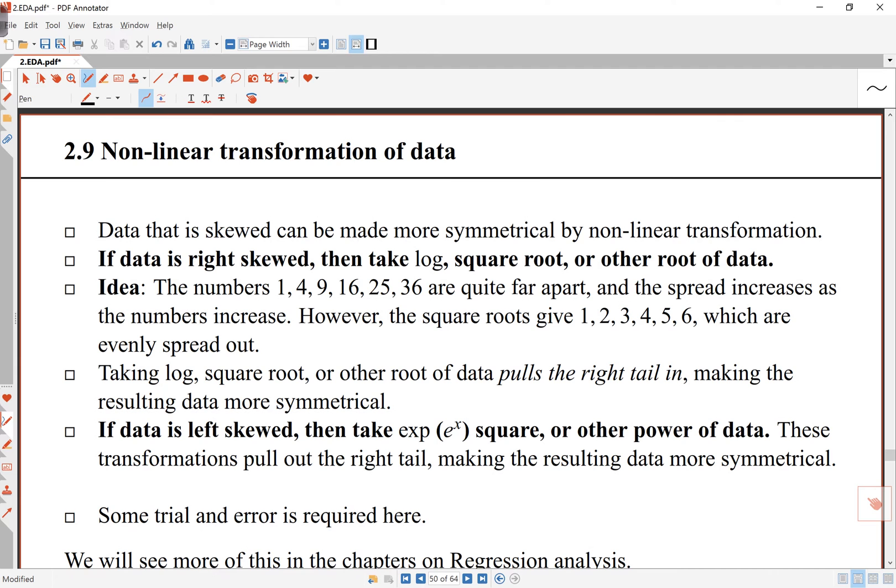Sometimes we perform nonlinear transformations of data. And the reason we do that is, if you've got data that's skewed, we can make it more symmetrical by some transformation. And the usual transformations are going to be either log, or square root, or other root if it's right skewed. And the idea is, if the data looks like this, by taking the log or square root, we take the large values and put them inwards. And so we hope we'll get data that looks more symmetric.